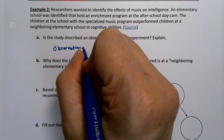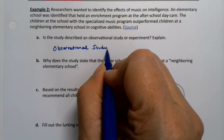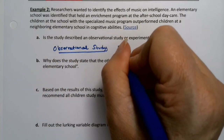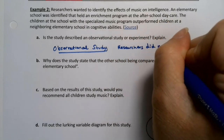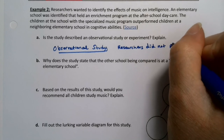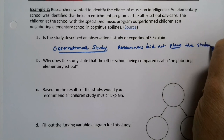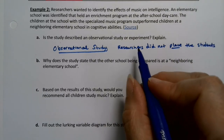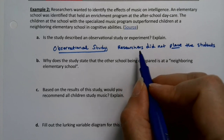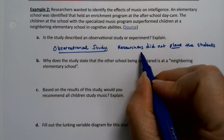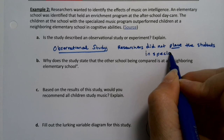There's no indication of researchers placing the students. That's what it would take — experiments are actually very involved things. Just for the beginning part of it, you need to randomly place the students. You need to choose random students and place them. The researchers did not place the students in the special program or in the school for that matter.